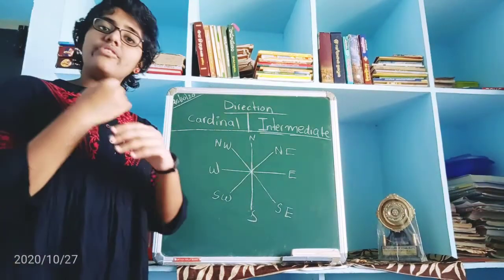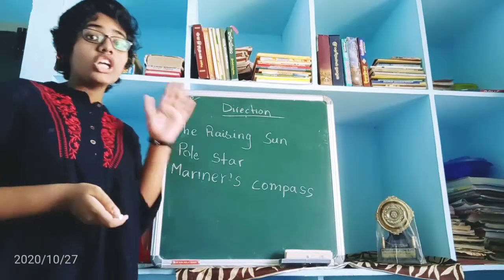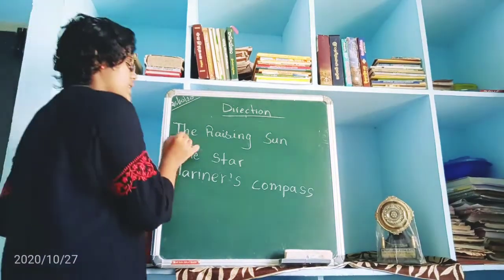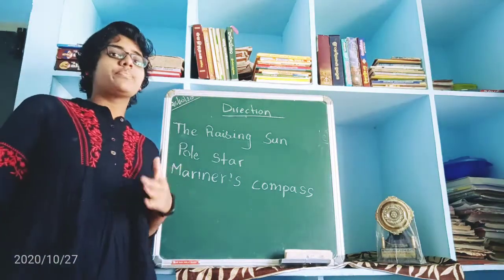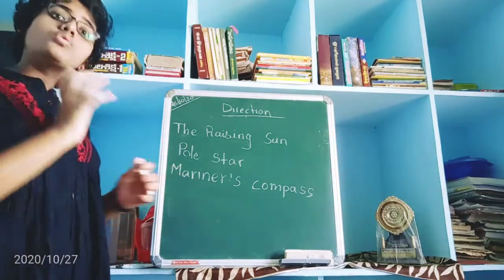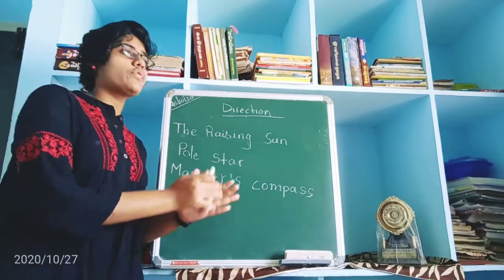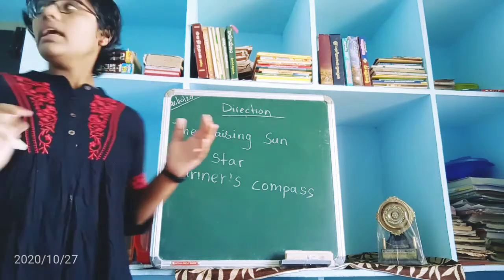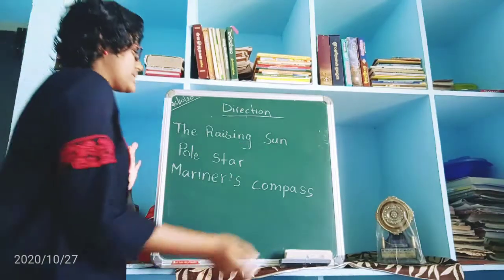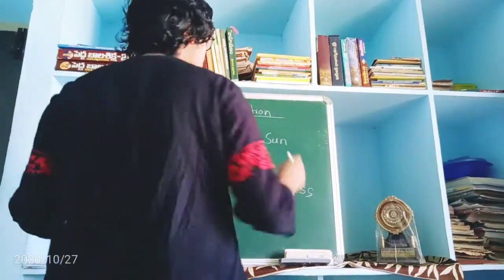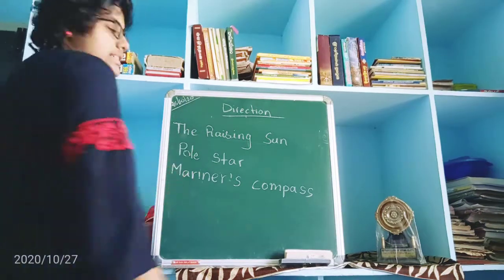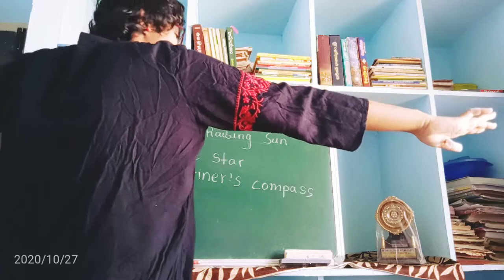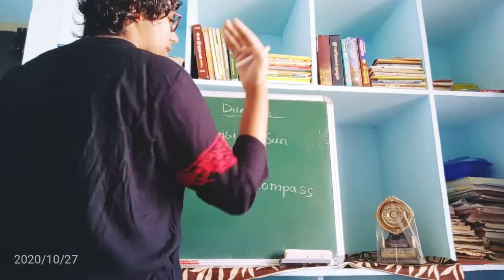Now let us learn how to find directions. There are 3 methods. The first one is the rising sun. We know the sun rises in the East. If you stand facing the rising sun, that direction is East. To your left is North, to your right is South, and opposite — your back — is West.